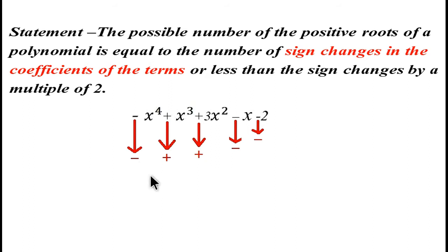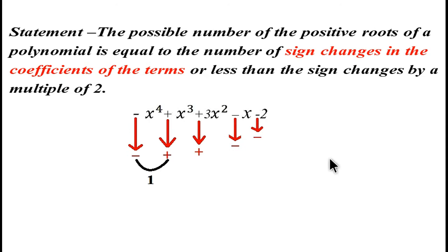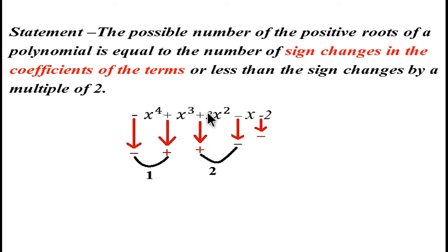According to the rule, we have to find the sign changes in the coefficients of the terms. Going from the first term to the second, the sign changes from negative to positive. From the second to the third term, the sign does not change. From the third to the fourth term, the sign changes. From the fourth to the fifth, the sign does not change. So we have two sign changes in total.